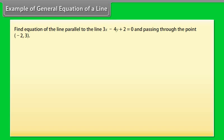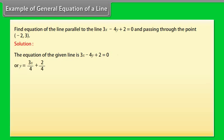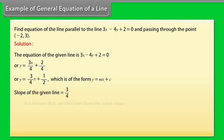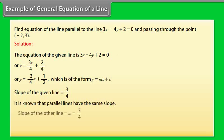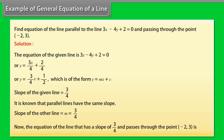Example: Find the equation of the line parallel to 3x − 4y + 2 = 0 and passing through the point (−2, 3). Solution: The given line 3x − 4y + 2 = 0 can be written as y = (3/4)x + 1/2, so its slope is 3/4. Since parallel lines have the same slope, the required line also has slope 3/4. The equation of the line with slope 3/4 passing through (−2, 3) is 3x − 4y + 18 = 0.